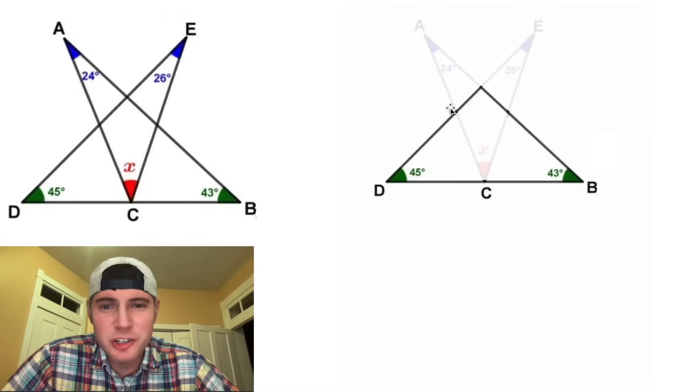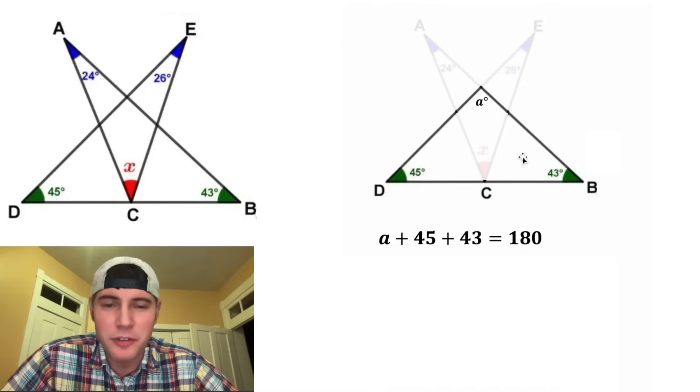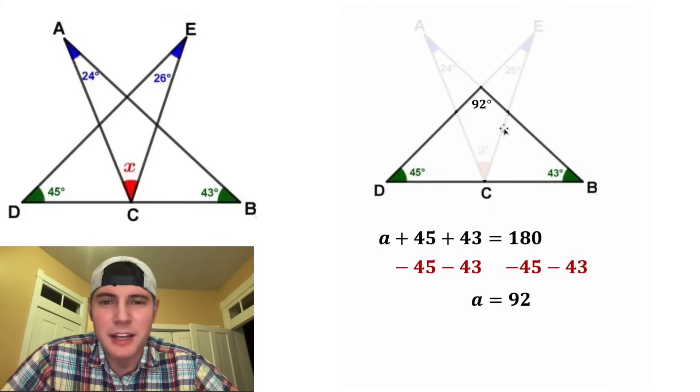First step, I want to focus on this triangle right here. If we call this angle A, we know that A plus 45 plus 43 has to equal 180. And then after we subtract 45 and subtract 43 from both sides, that'll give us A is equal to 92. So we can update this to be 92 degrees.